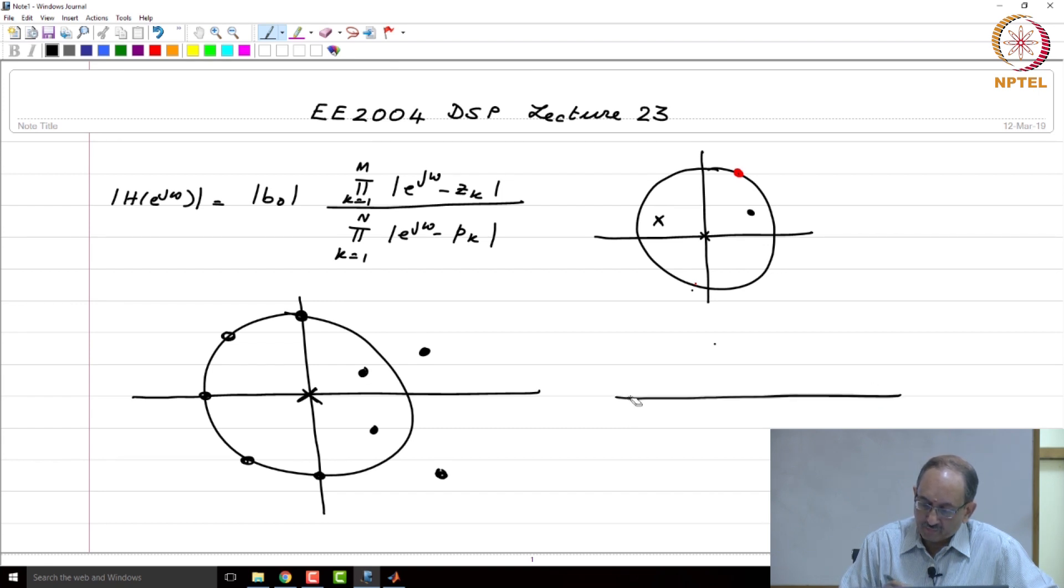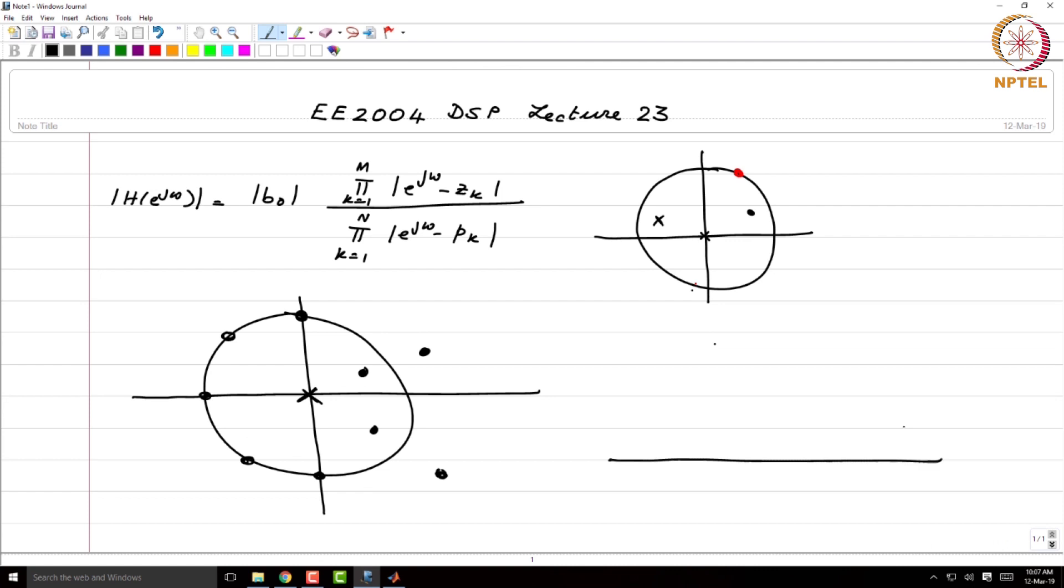And now, to get a feel for the frequency response, if you are here on the unit circle at omega equal to 0, then you are farthest away from all the zeros. And you go along the unit circle, roughly at this location you are closest to these two zeros.